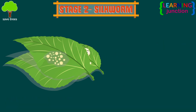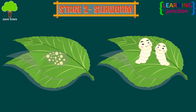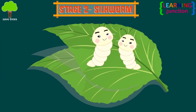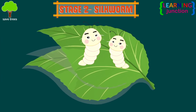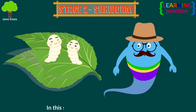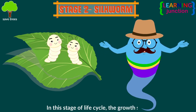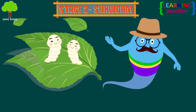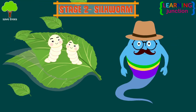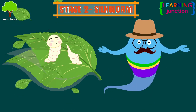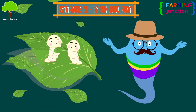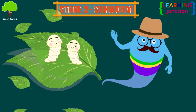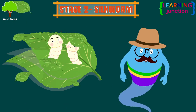Stage 2: Silkworm. A hairy silkworm emerges after the eggs crack. In this stage, growth starts. They feed on fresh mulberry leaves and consume a large amount of these leaves for around 30 days before going on to the next stage.